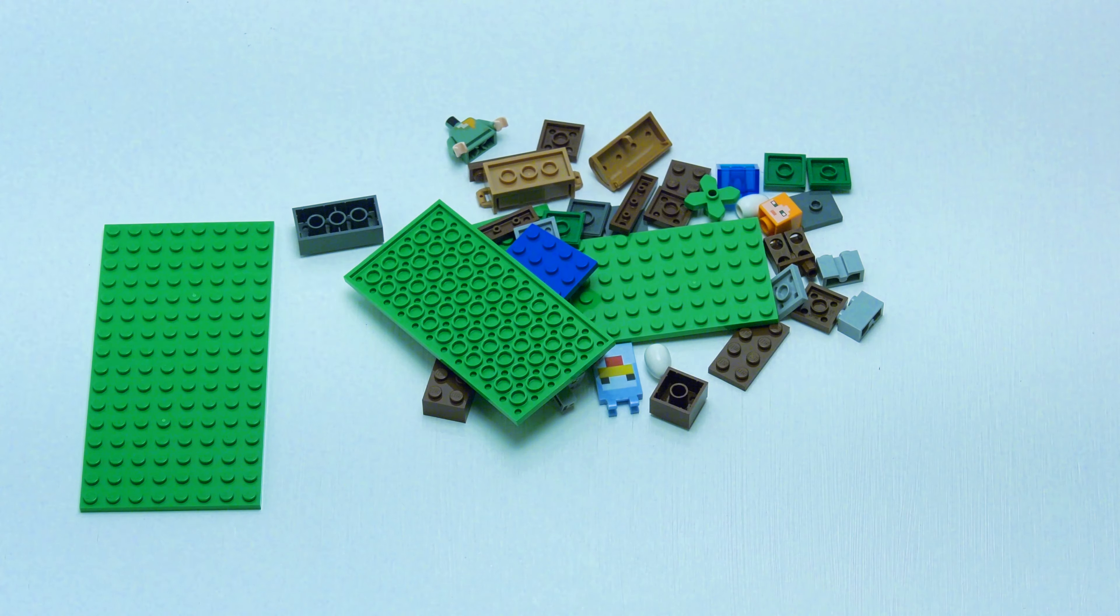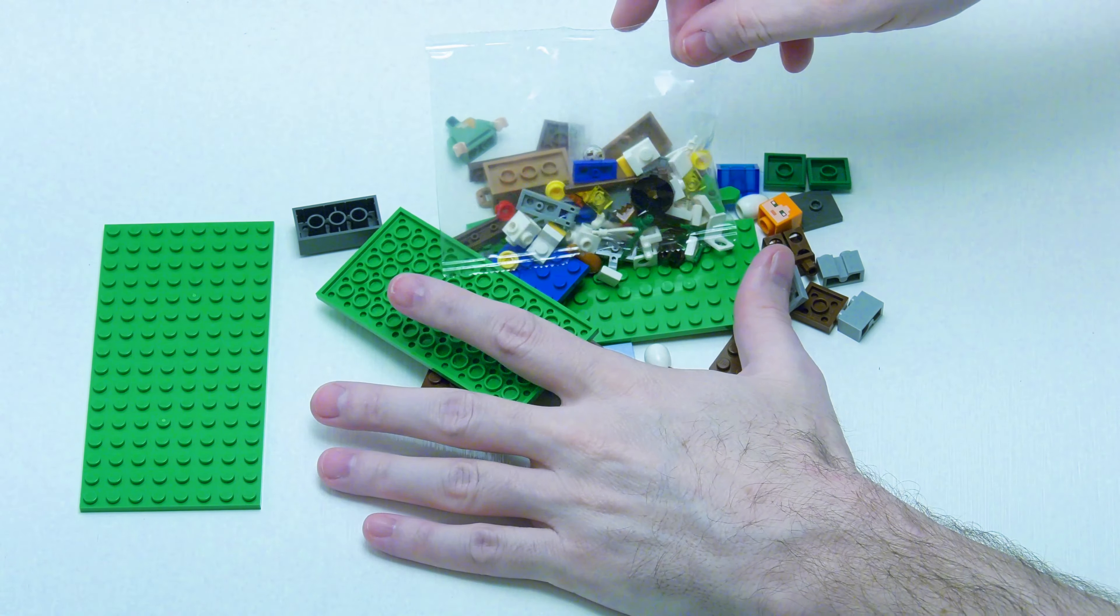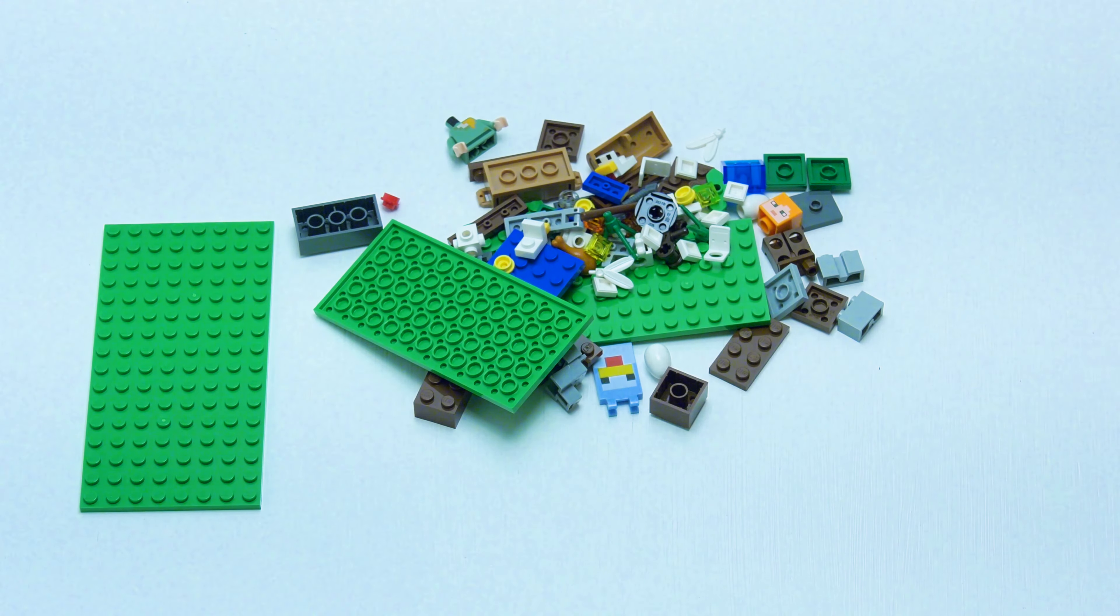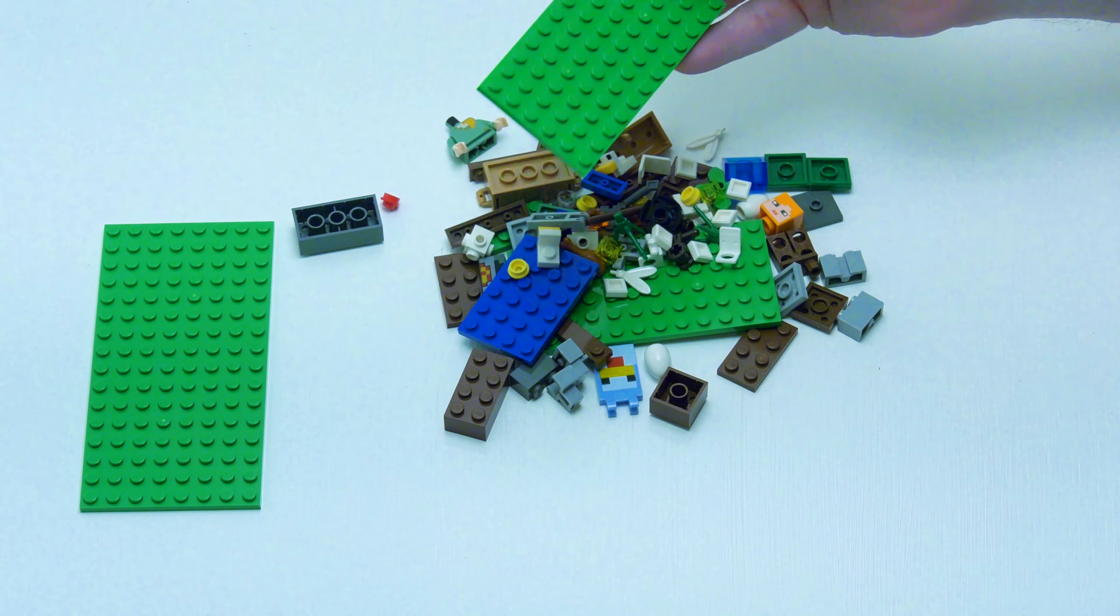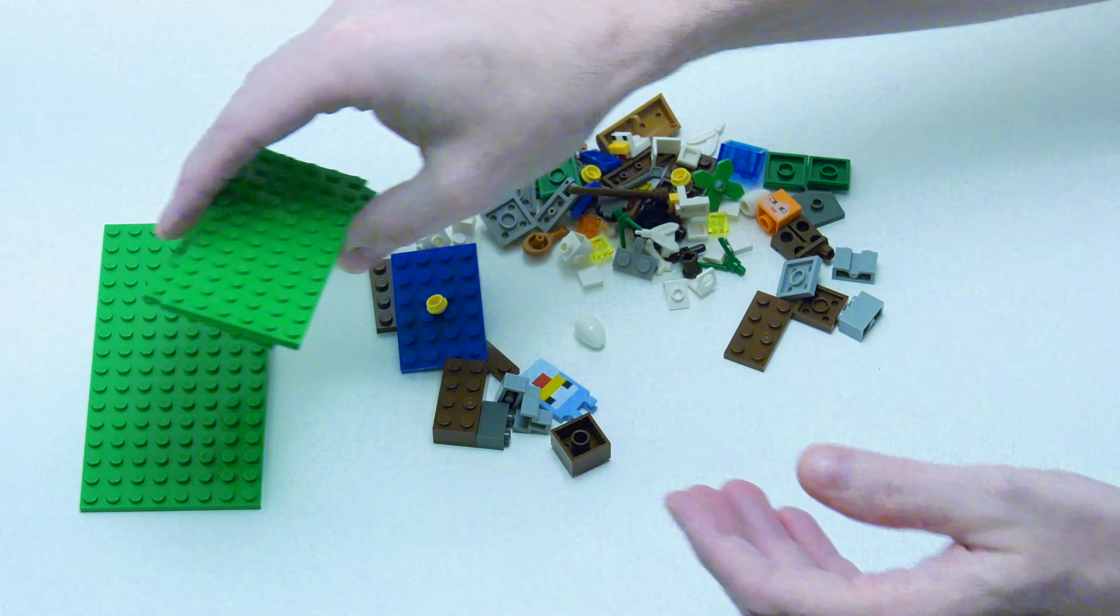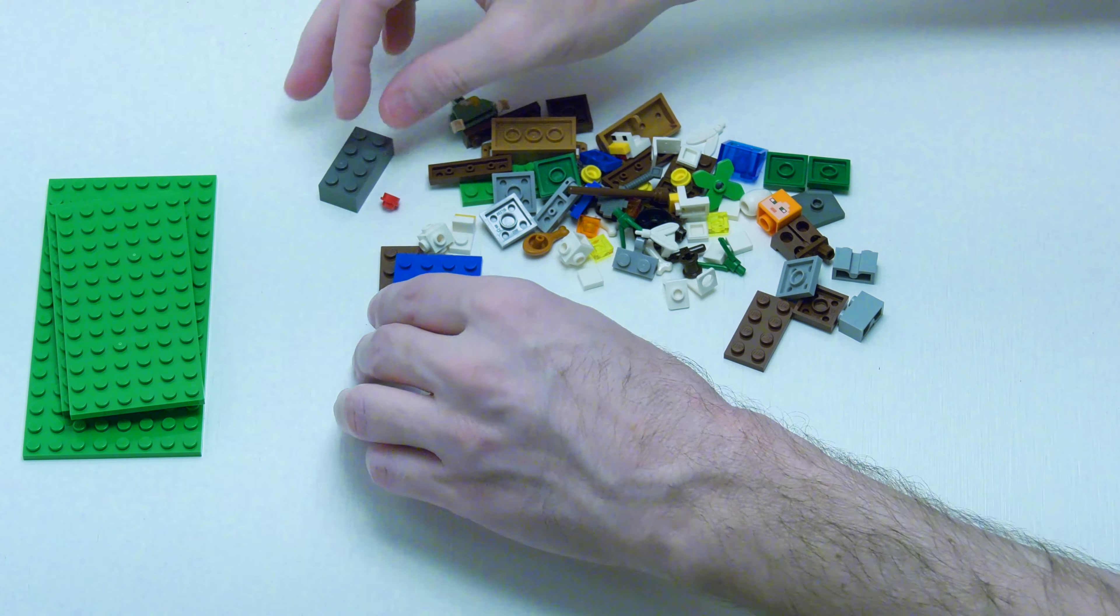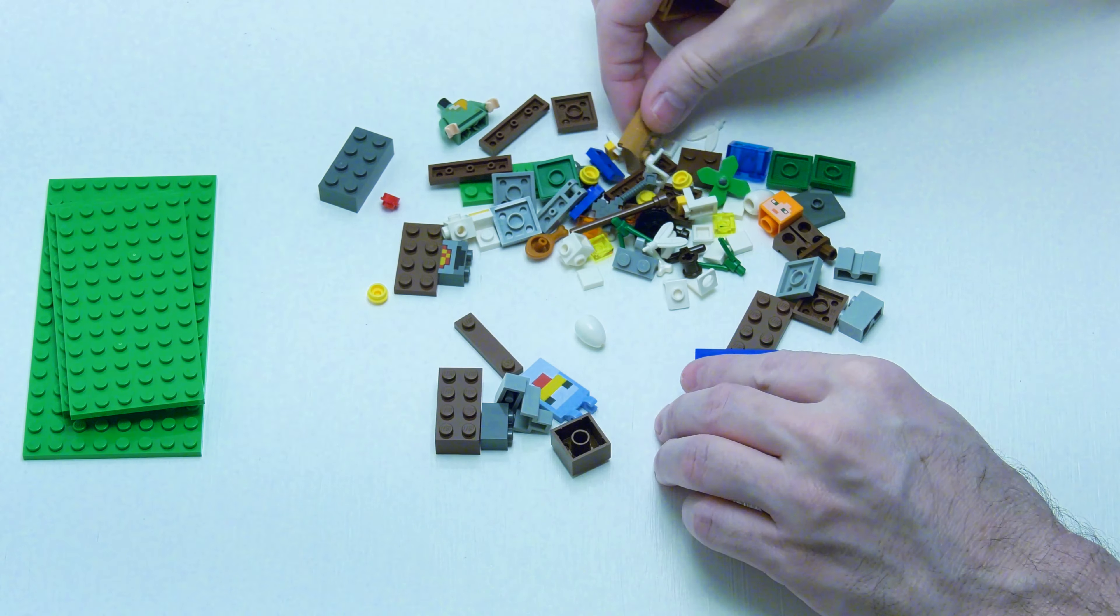When I start adding all the custom pieces, I start snubbing my nose at a lot of these new sets. That's why I don't see any reviews anymore. Looks like we got ourselves a pair of 6 by 12 plates. Those always come in handy. A couple of bricks.